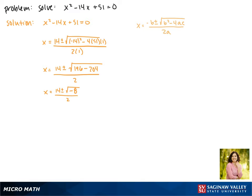But we can find our complex solutions by breaking up the square root of negative 8 into the square root of 8 times the square root of negative 1. The square root of negative 1 is i, so this gives us i times the square root of 8. The square root of 8 can be simplified, so this gives us 2i times the square root of 2.